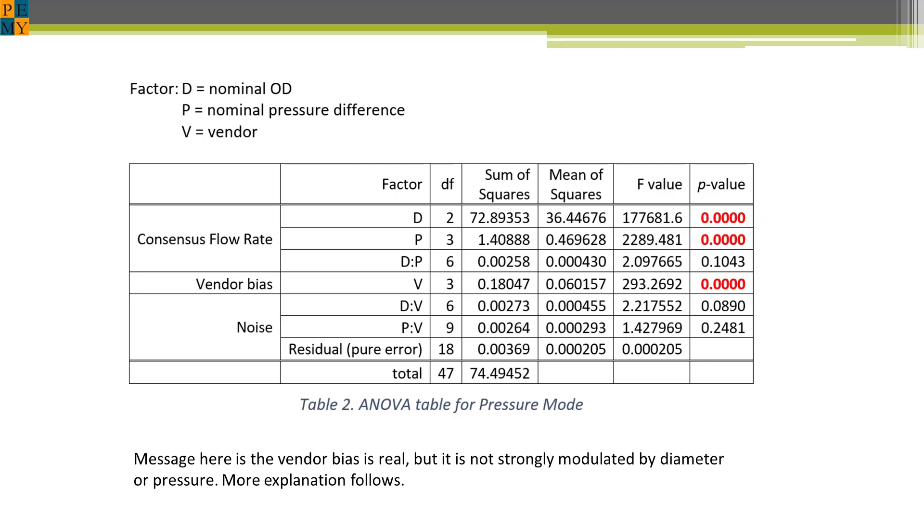The P value is the likelihood that the factor under consideration would occur by chance alone. A standard criterion for rejecting the idea that the difference in results is due to chance alone is to assume that any P value less than 0.05 is significant for that factor.